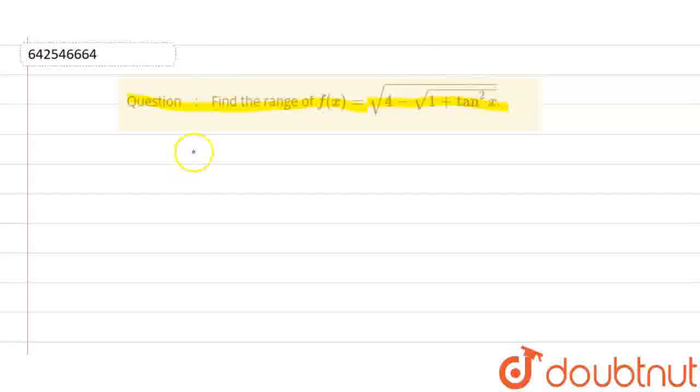So we know that the value of 1 plus tan squared x is equal to sec squared x. So we can write this function f(x) is equal to square root of 4 minus square root, we can say that this was equal to sec squared x.